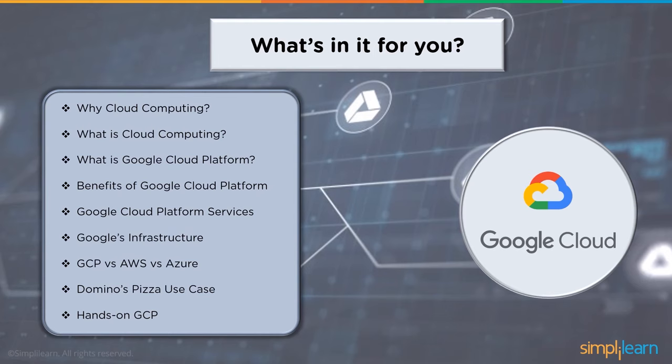We'll also cover a little bit about Google's infrastructure, a comparison of different cloud providers such as Google offering GCP, Amazon offering Amazon Web Services, and Microsoft which offers Azure. We will also learn about Domino's Pizza use case and then have a quick demo on using some of the services on GCP.